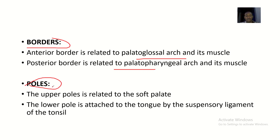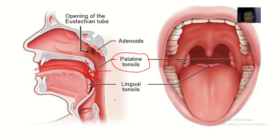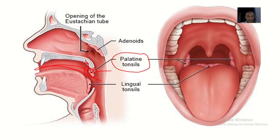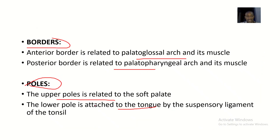What are the poles of the palatine tonsil? The upper pole is related to the soft palate. The lower pole is attached to the tongue by the suspensory ligament of the tonsil. That means the palatine tonsil is somehow connected to the tongue, but with a loose ligament — the suspensory ligament of the tonsil.